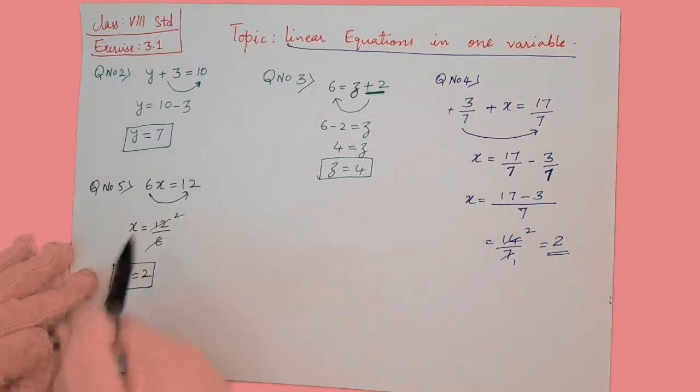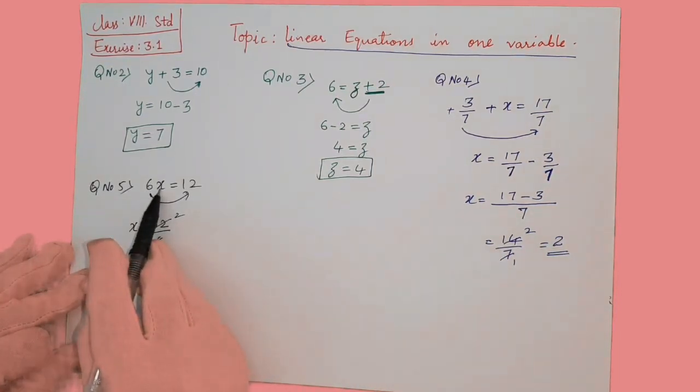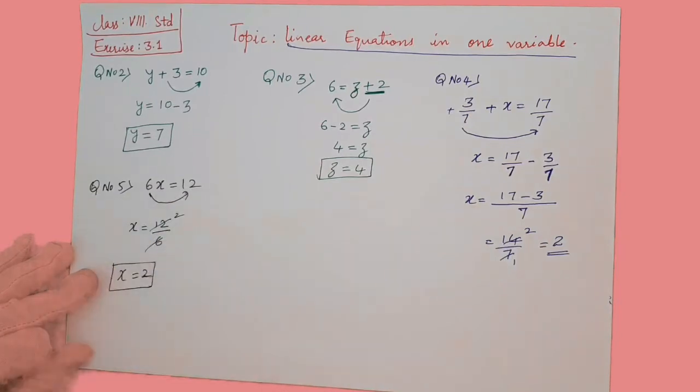Again, if we substitute 2 here, 6 into 2 is 12. So we are getting LHS and RHS as equal.